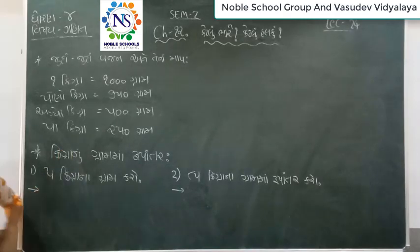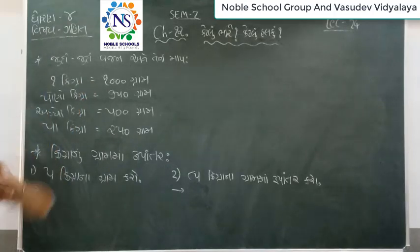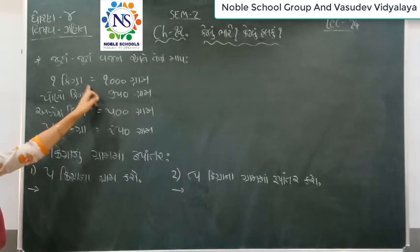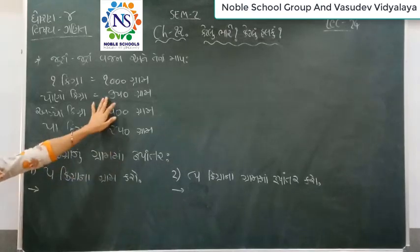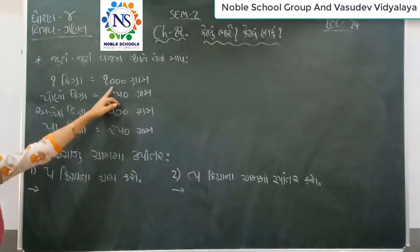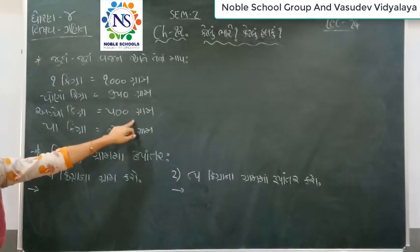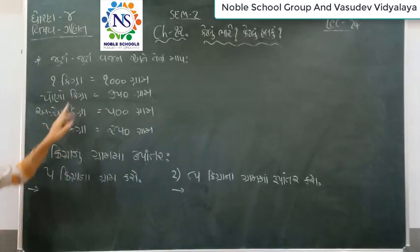Then, you use a fat for one gram. 1 kg is equal to 1000 grams. 1 kg is equal to, 5 kg is equal to 750 kg. 5 kg is equal to 1 kg. How much is 1 kg? 500 kg. 5 kg is equal to 1 kg.